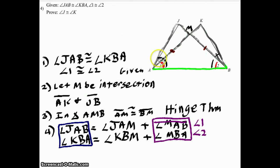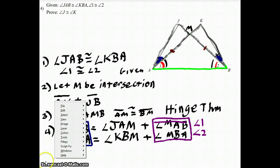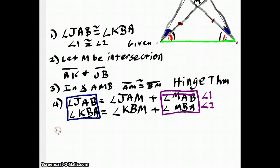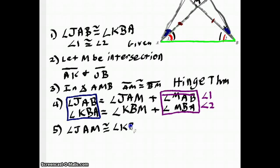That lets me show that these two smaller blue angles are congruent. So my fifth statement is: angle JAM is congruent to angle KBM, and the reason is angle subtraction.